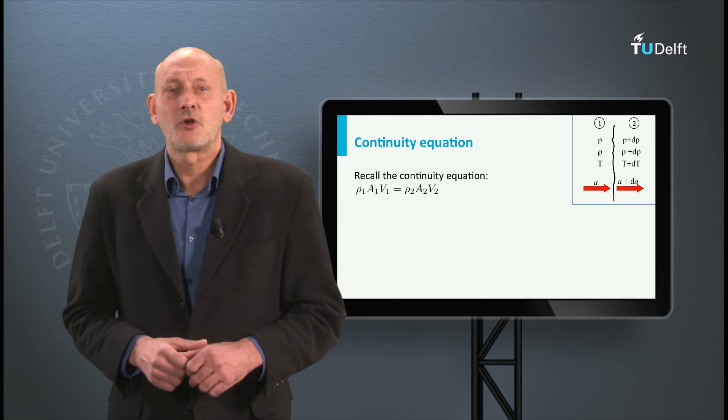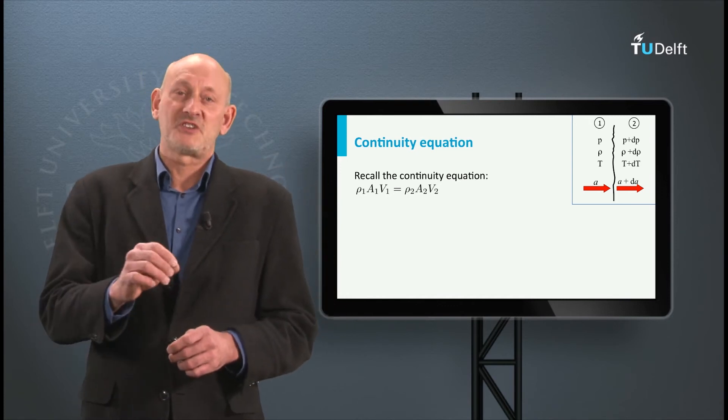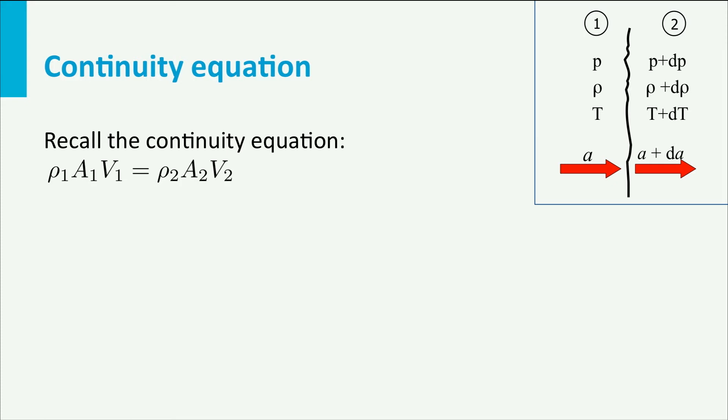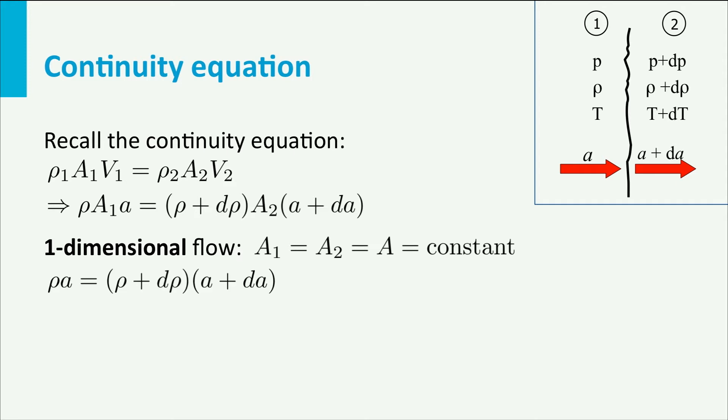If we now apply the continuity equation for compressible flow to this situation, we find rho A V is constant. With the properties shown in the picture, this transforms into rho times A1 times A is rho plus d rho times A2 times A plus dA. The model is one-dimensional, which in practice means that the area doesn't change going from 1 to 2. This leaves us with this relation for rho times A.